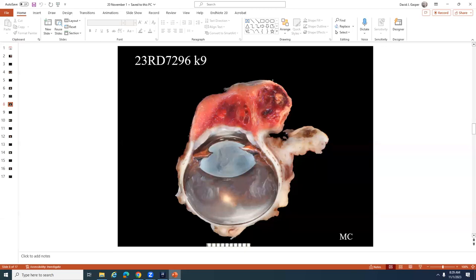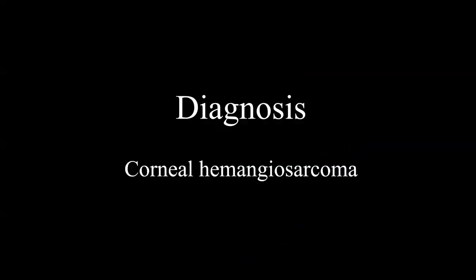You do wonder about the UV radiation component in cases like this — it's good to ask where the dog is from. There was no solar elastosis seen in these sections, but there could still have been a role for UV, at least theoretically, in the development of pannus.